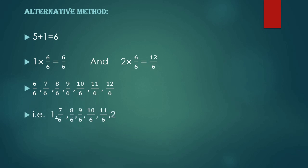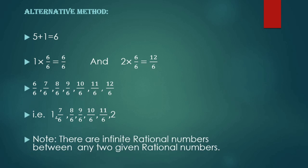So we can write: 6/6 = 1, then 7/6, 8/6, 9/6, 10/6, 11/6, and 12/6 = 2. We have found 5 rational numbers between 1 and 2. In a similar manner, we can find as many rational numbers as possible. Hence, we conclude that there are infinitely many rational numbers between any two given rational numbers.